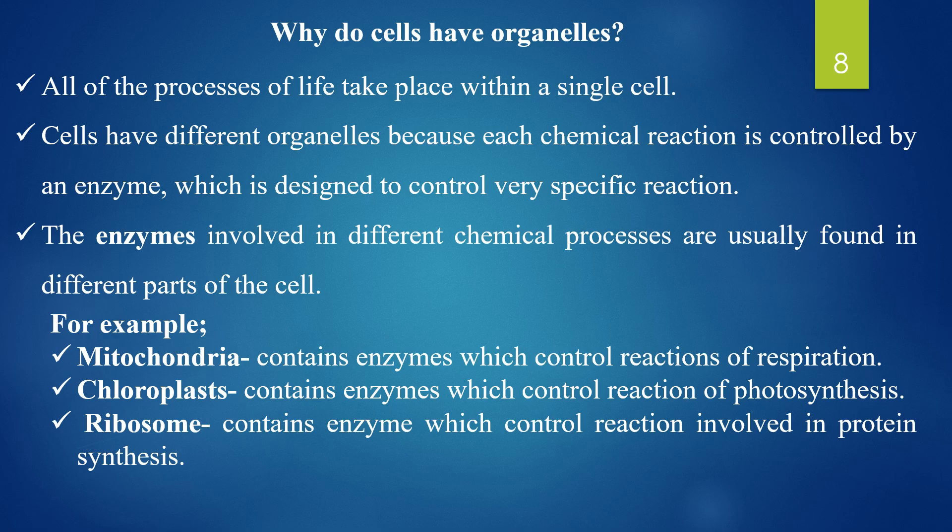Enzymes are biological catalysts — they speed up chemical reactions. Enzymes are made of proteins. Enzymes are involved in different chemical processes in different parts of the cell. For example, enzymes in mitochondria control the reaction of respiration. Enzymes in chloroplasts control the reaction of photosynthesis. The enzymes found in ribosomes control reactions involved in protein synthesis.